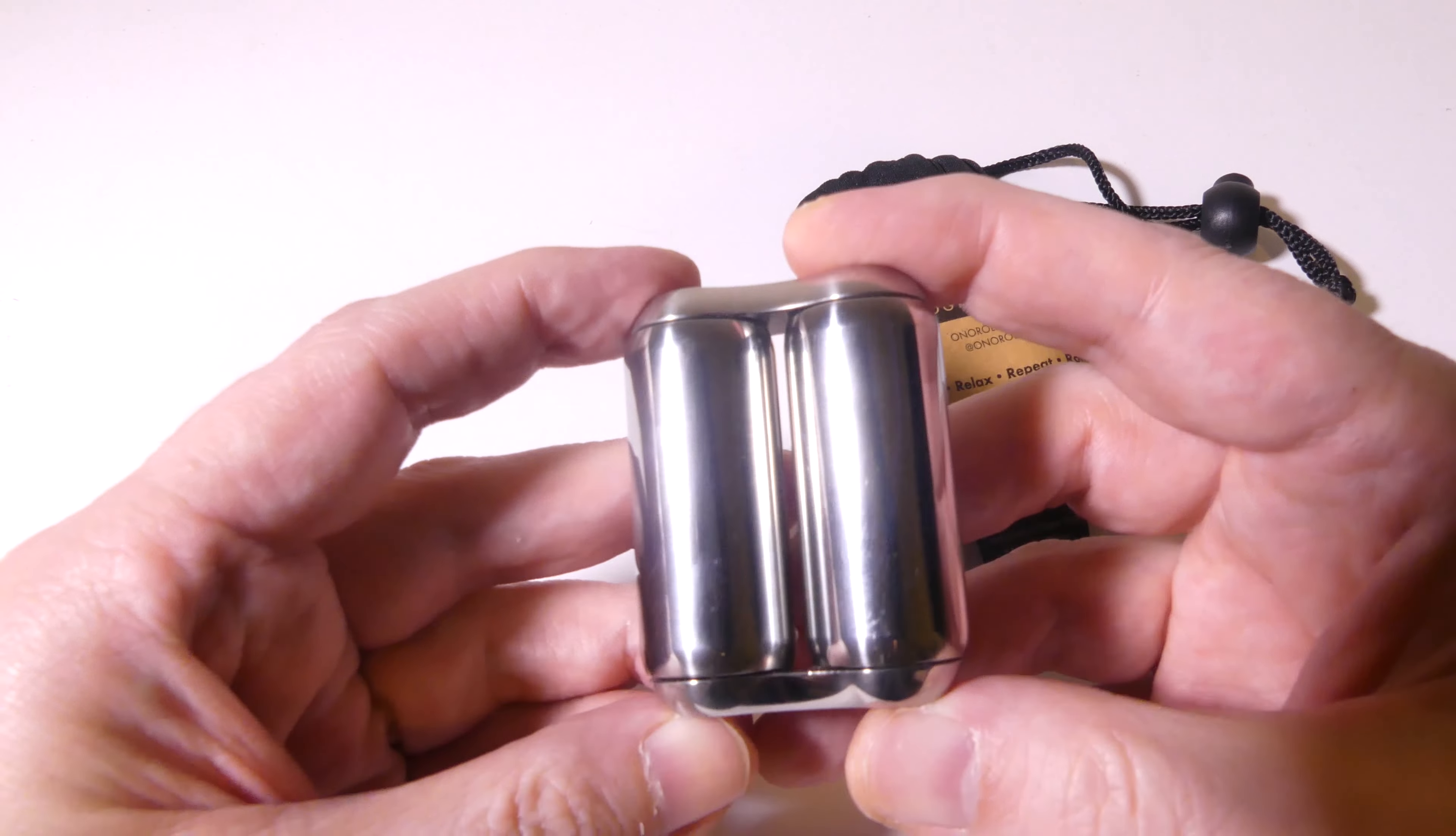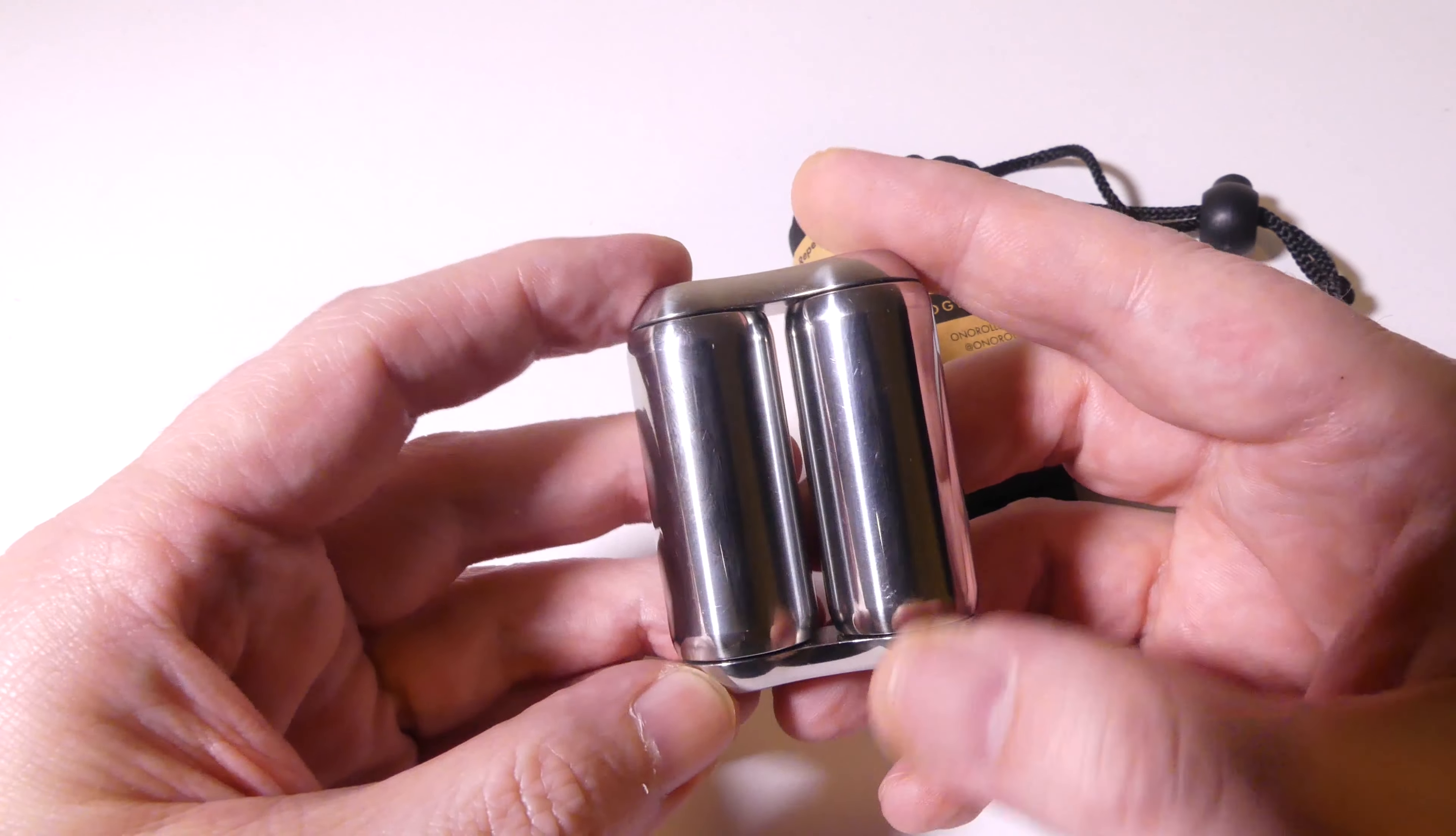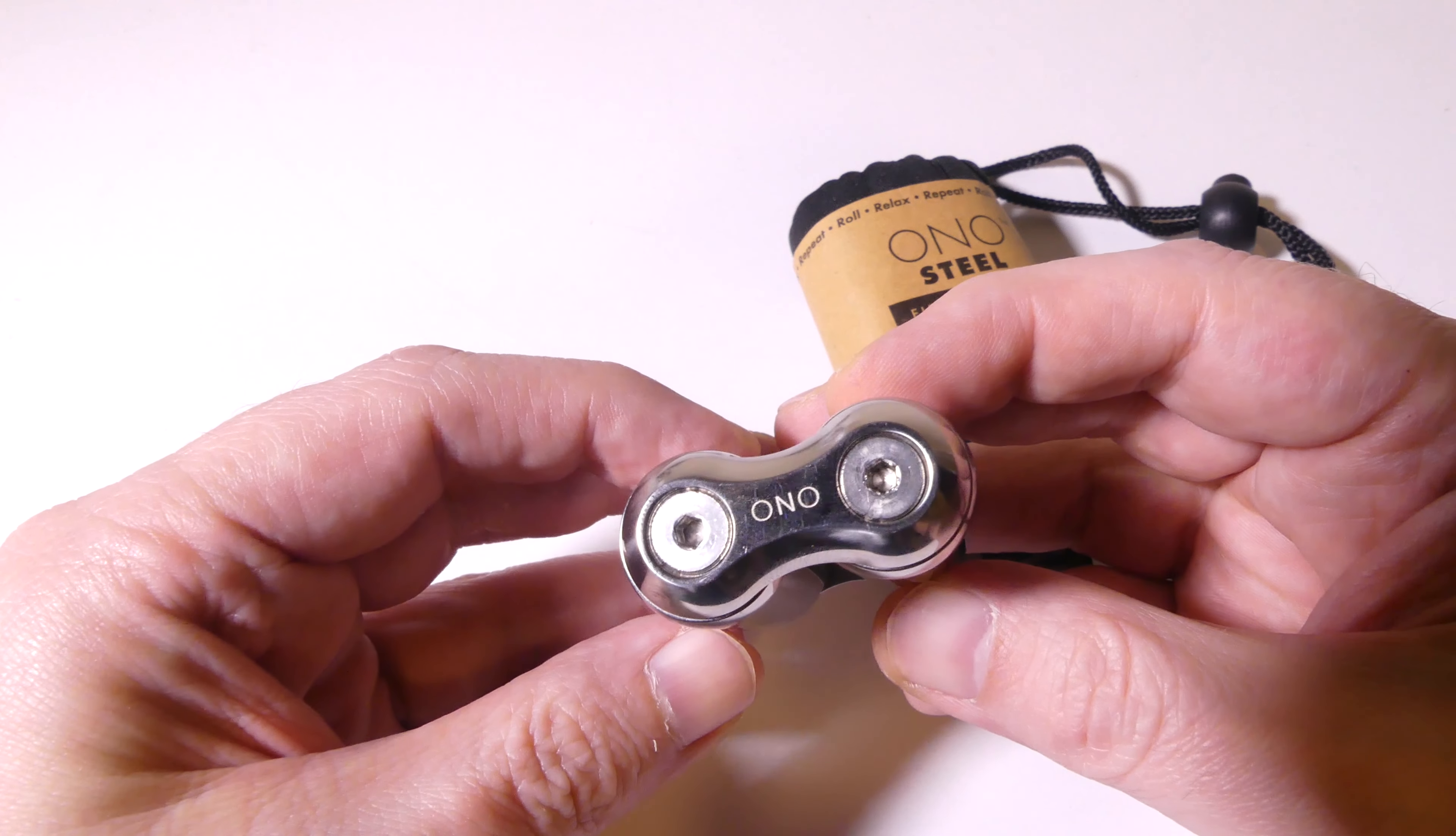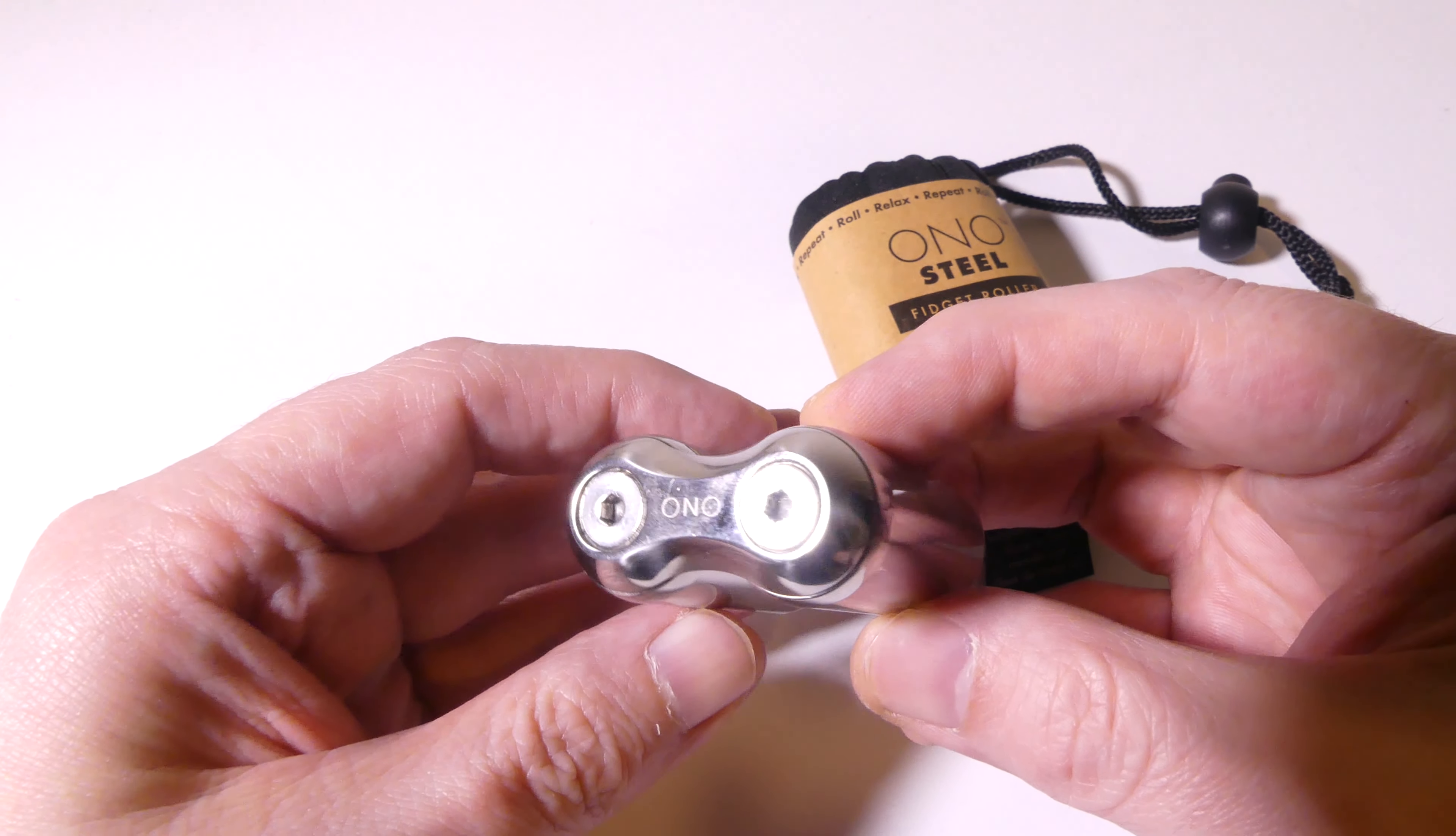Now, this is the Ono steel mini, and as you can see, it's a lot smaller at 2.2 inches high. This is made out of stainless steel.